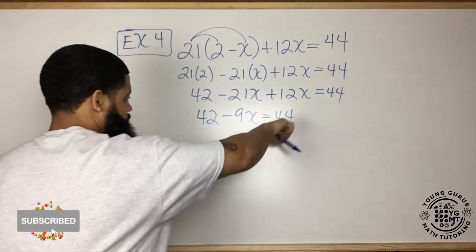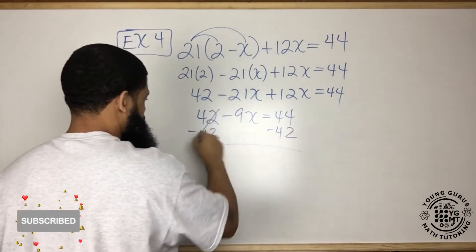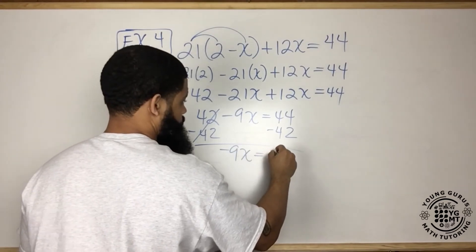We want to take this over there, so minus 42, minus 42. Those cancel, negative 9x equals 2.